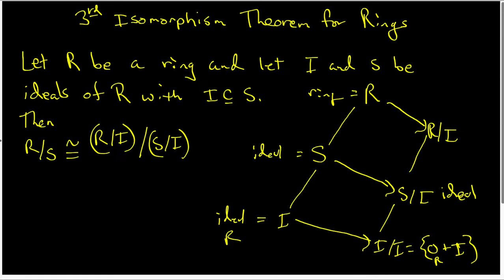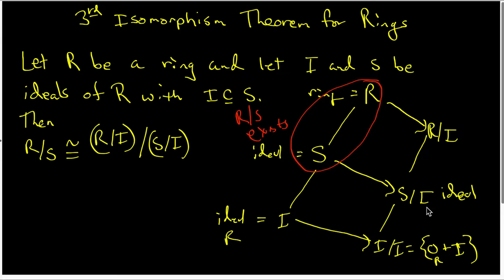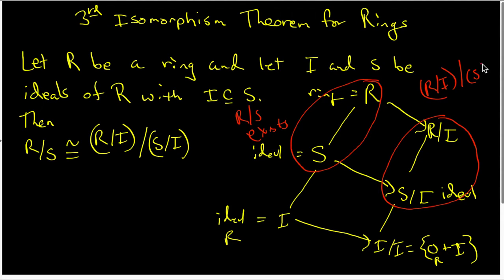Because S is an ideal of R, the quotient structure R mod S exists. And because S mod I is an ideal of R mod I, we also have the quotient structure on this side existing — in other words, R mod I mod S mod I exists. What the third isomorphism theorem says is that the quotient structure for this side of our diagram and the quotient structure for this side are actually isomorphic to each other.